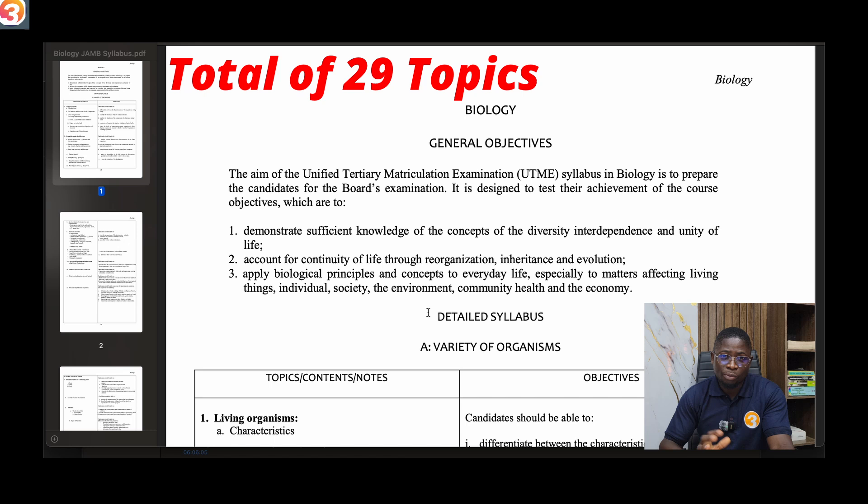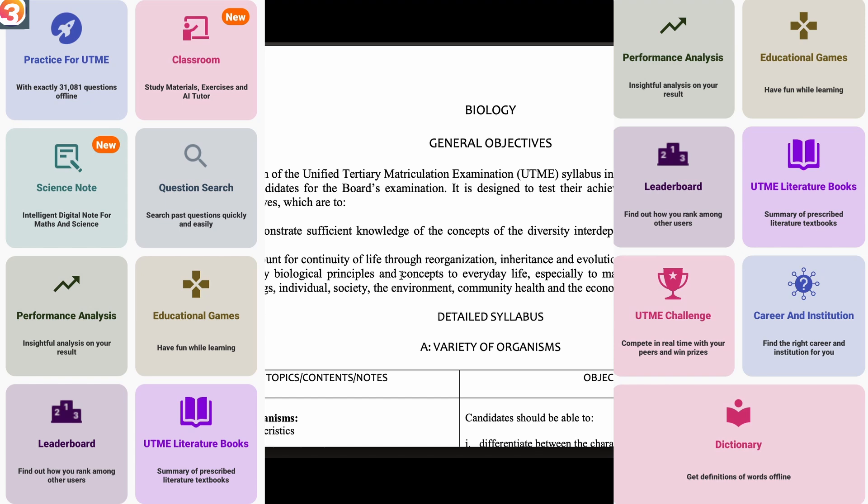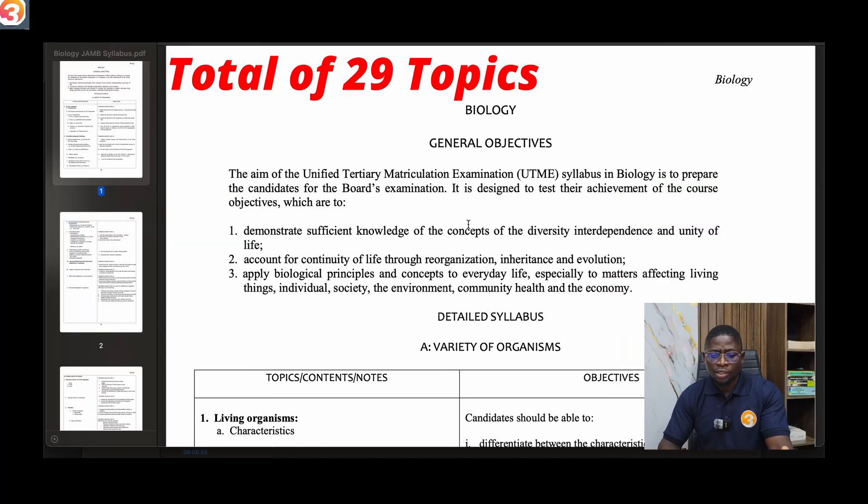But of course if you are serious, there's nothing you really cannot do. By 29 topics, it actually means that you can actually finish your syllabus like two or three times before your main examination and then back it up with past questions. If you have the O3 school JAM speed practice app, then success is for you. The O3 school JAM app is for students who want to pass their exam at once. After studying, it's good to follow up with past questions.